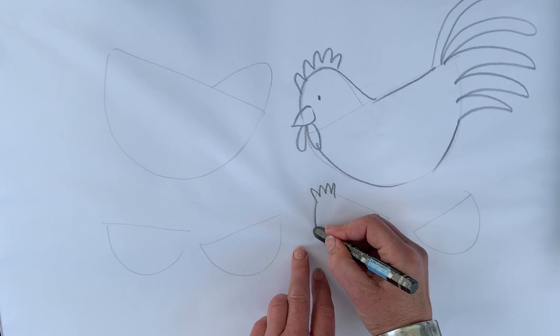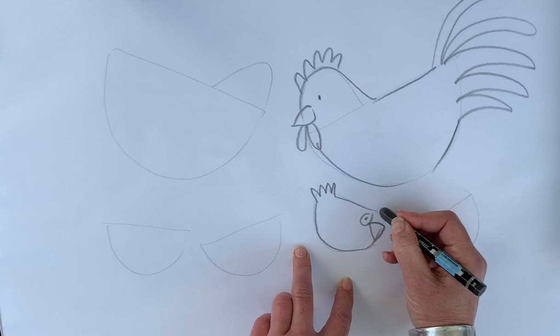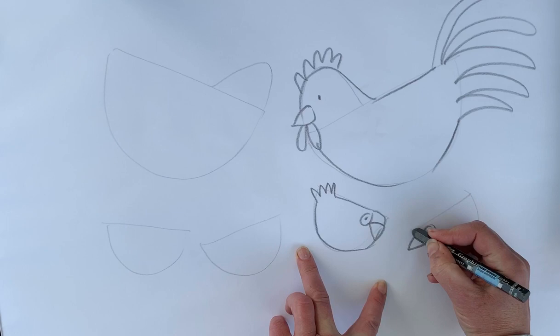Okay, and then these are going to be baby chicks at the front. Now if I put their beaks in different places they'll look like they're looking in different directions even though they're all the same shape to begin with.